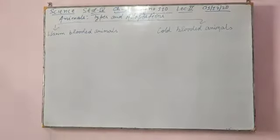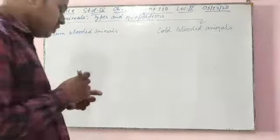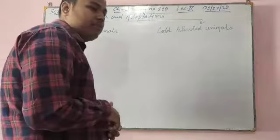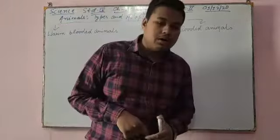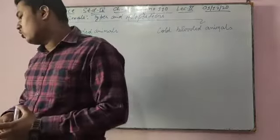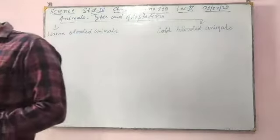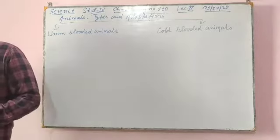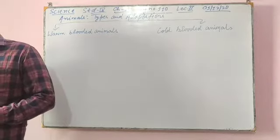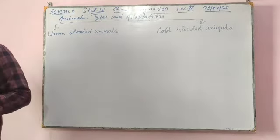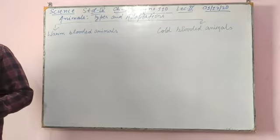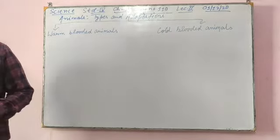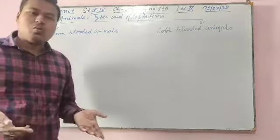Vertebrates may be warm-blooded or cold-blooded animals. Warm-blooded animals maintain a constant body temperature at all times, even when there is a change in the temperature of their surroundings. We humans are also warm-blooded.